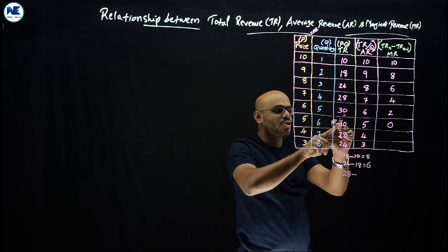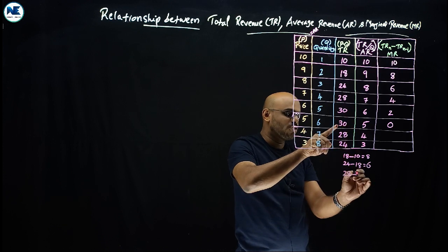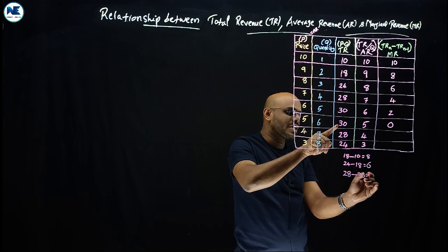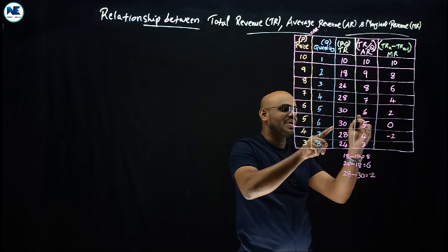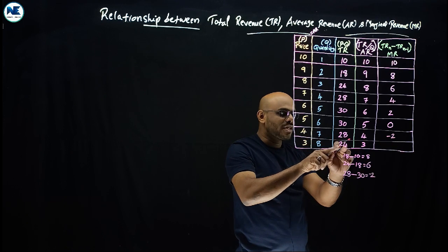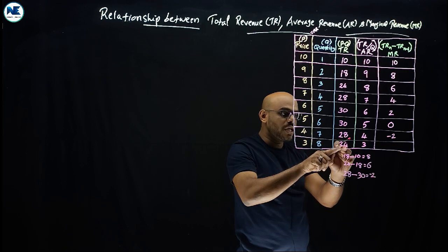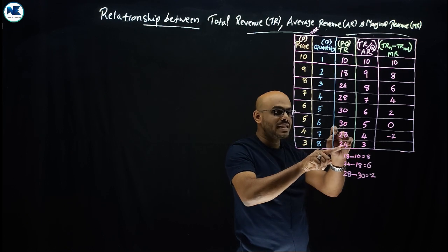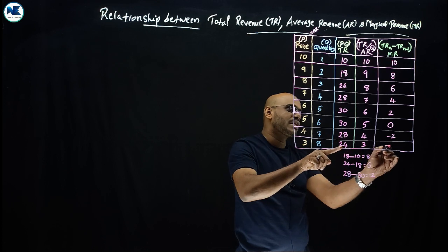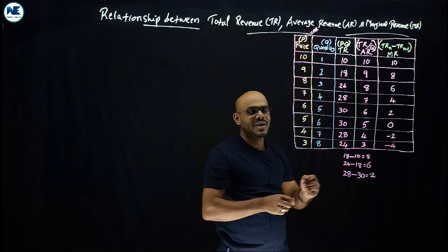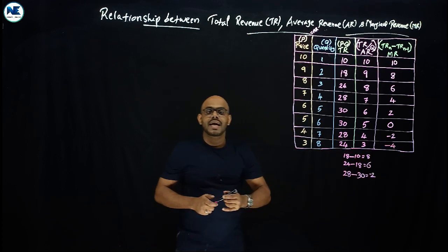Continuing the table: when TR reaches its maximum of 30, MR = 0. After that, total revenue begins to fall — TR = 28, giving MR = −2; then TR = 24, giving MR = −4. So marginal revenue becomes negative after the total revenue maximum.